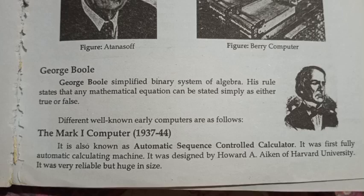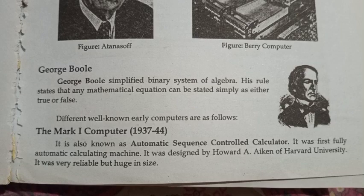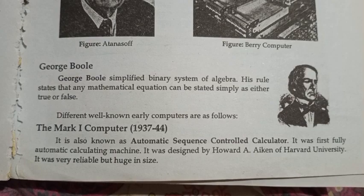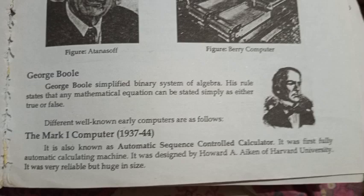Different well-known computers include the Mark I computer, developed from 1937 to 1944. It was also known as the Automatic Sequence Controlled Calculator. It was the first fully automatic calculator machine, designed by Howard Aiken of Harvard University. It was very reliable but huge in size.